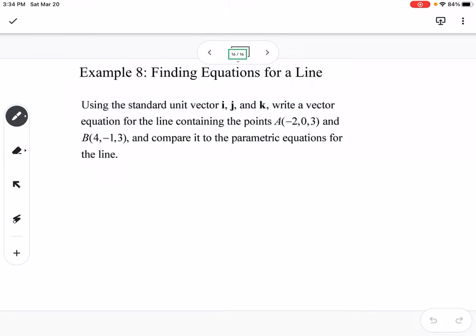It says, using the standard unit vector i, j, and k, write a vector equation for the line containing the points A(-2, 0, 3) and B(4, -1, 3), and compare it to the parametric equations for the line.